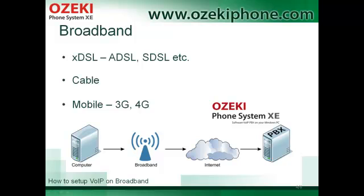Cable Internet access is another type — in this case the Internet connection is available via a coax cable. You can also use mobile Internet, which has a key advantage over the others: it provides flexibility, so you can reach the Internet wirelessly.